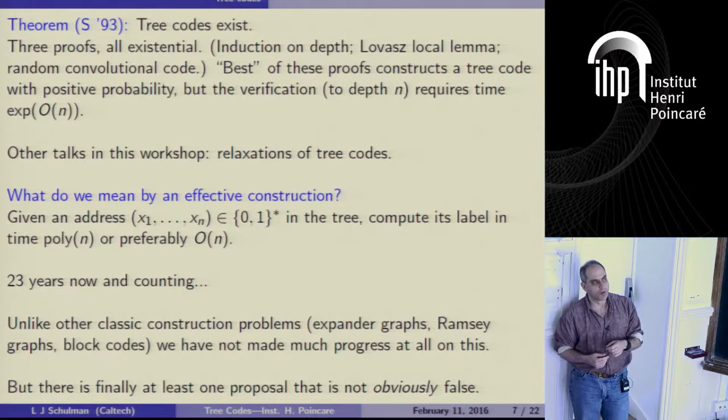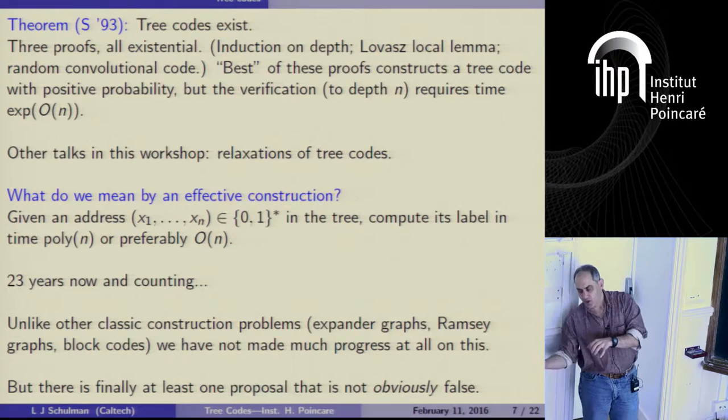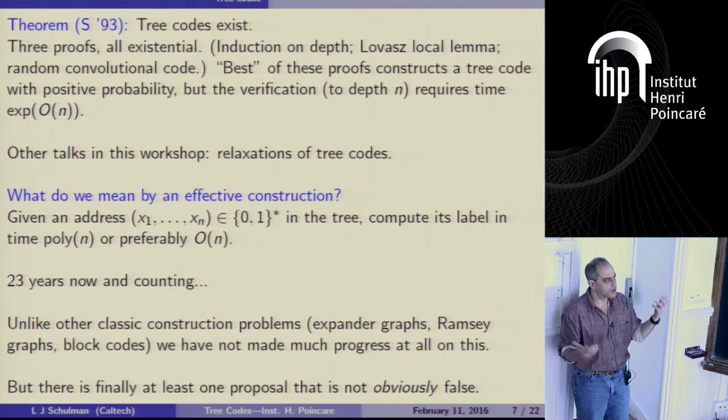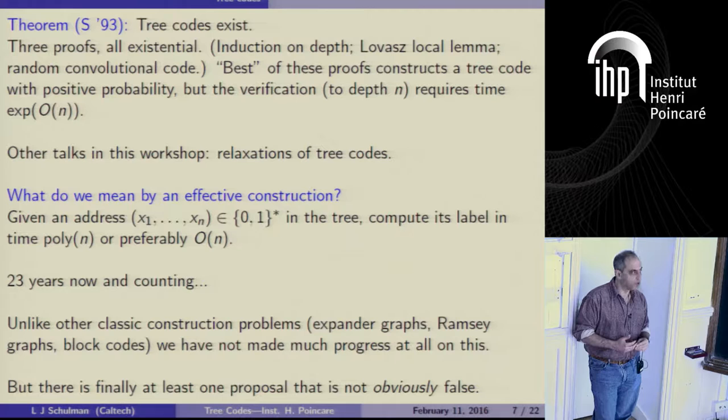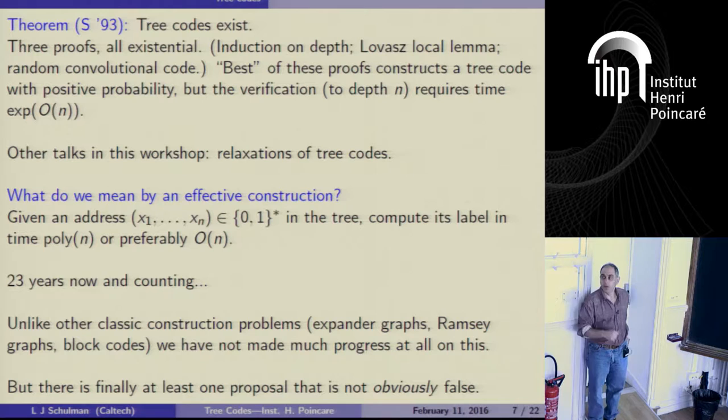If you give me a log N slowdown, there are better ways of getting where you need to go. There's actually a very simple construction — two decades old or so — where if you give me a log N slowdown, you get a completely constructive approach: just use block codes of various lengths and glue them together in parallel. What makes this problem really challenging is that we want constants — constant alphabet size and constant distance both simultaneously.